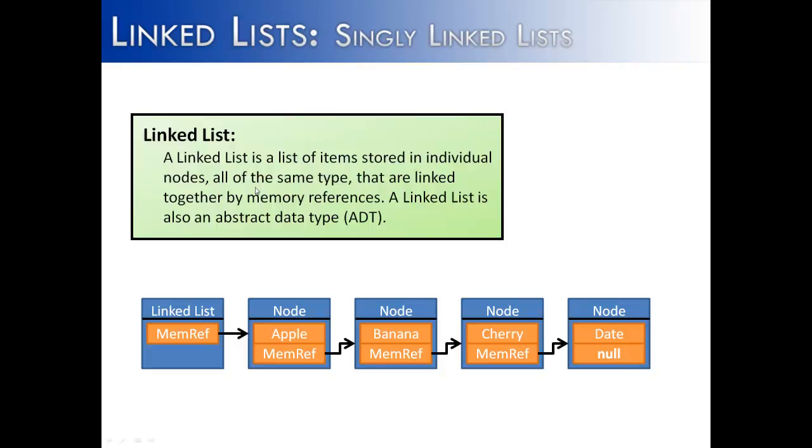And so you can see our definition of a linked list is a list of items. We do have a list of items: apple, banana, cherry, date, all of the same type. They're all strings. They're linked together by memory references, definitely linked together by memory references. And it's an abstract data type, meaning you could use linked lists with C++, C Sharp, Java. The idea of the data structure linked list is an abstract idea.